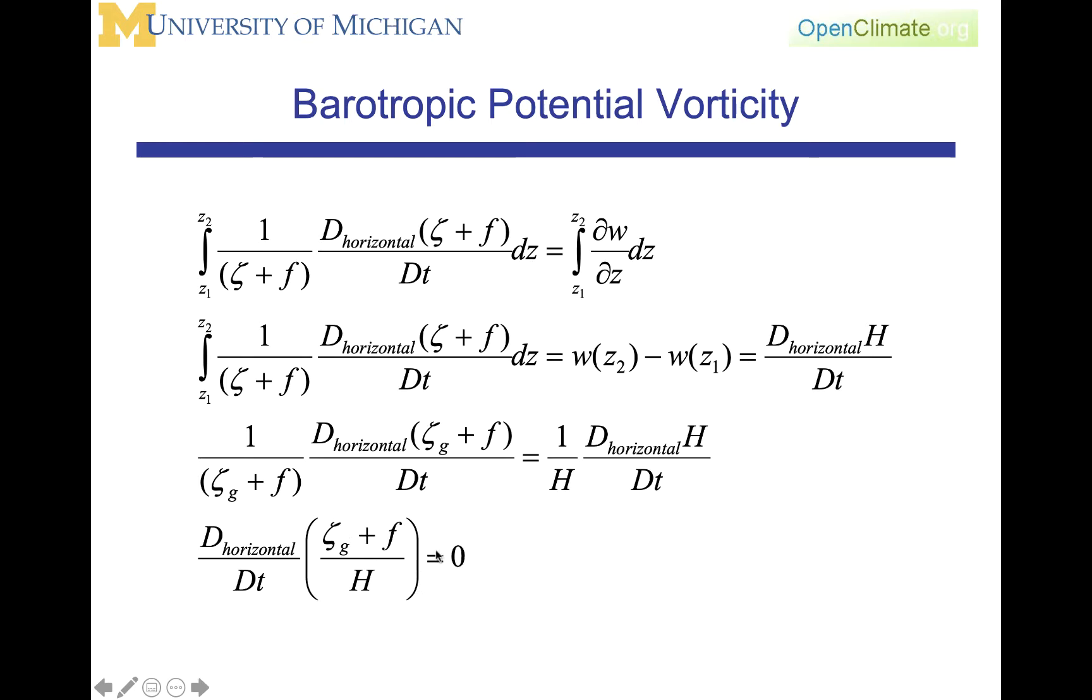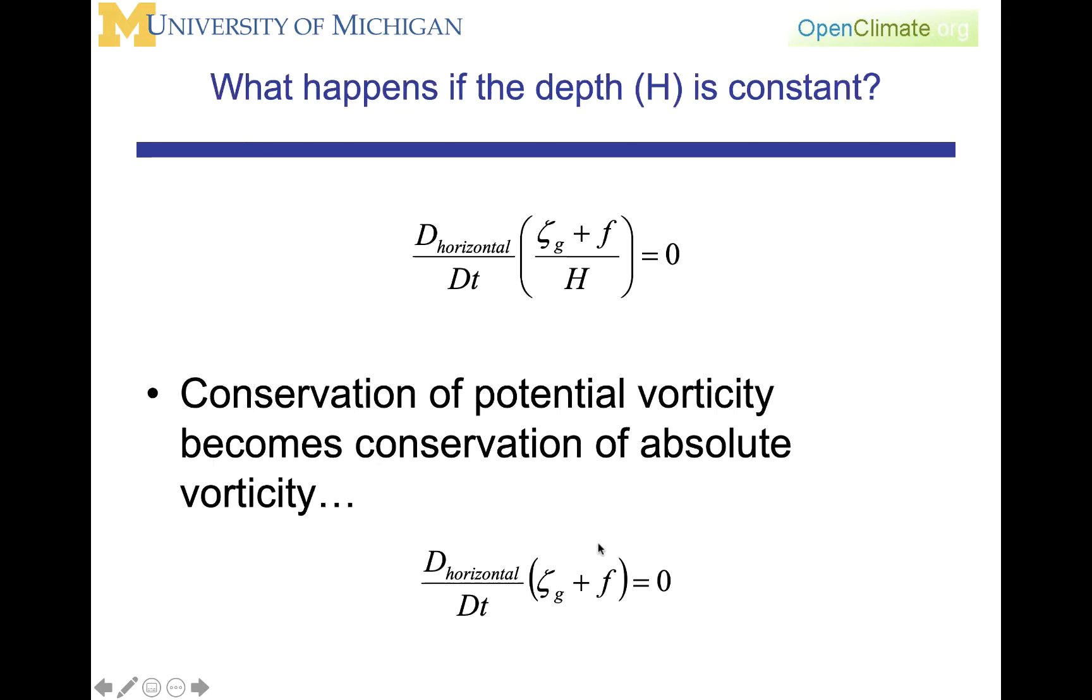Hence this quantity is conserved, which is represented here. Here is the conservation of the geostrophic or the barotropic potential vorticity. If H doesn't change, then this states that the conservation of potential vorticity becomes the conservation of absolute vorticity.